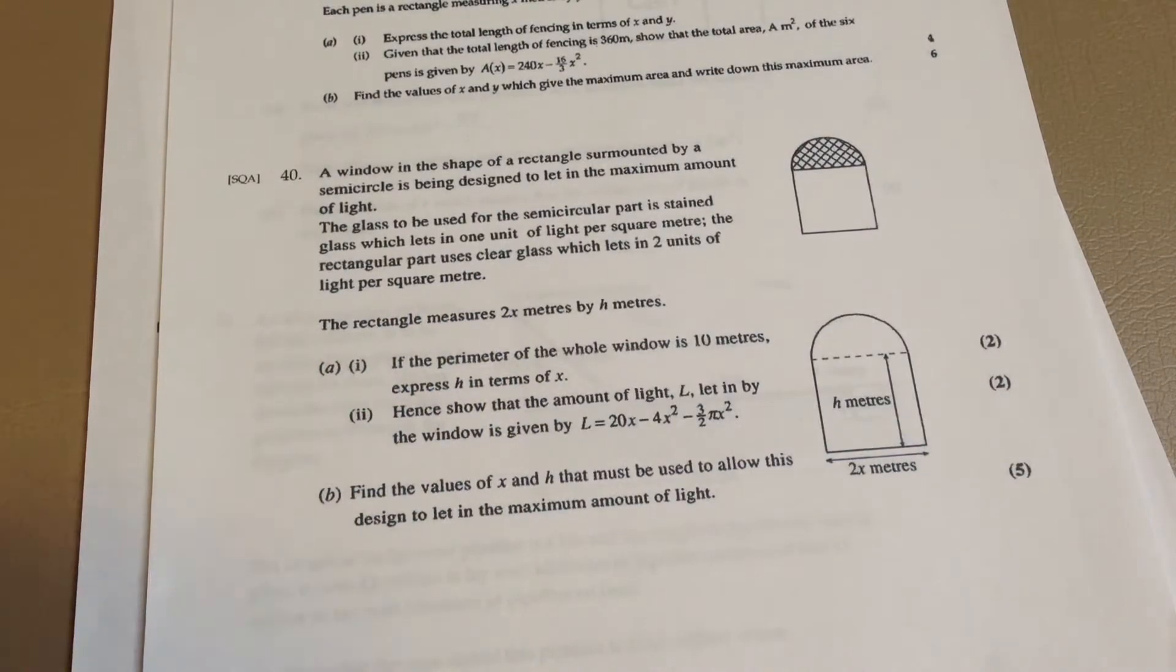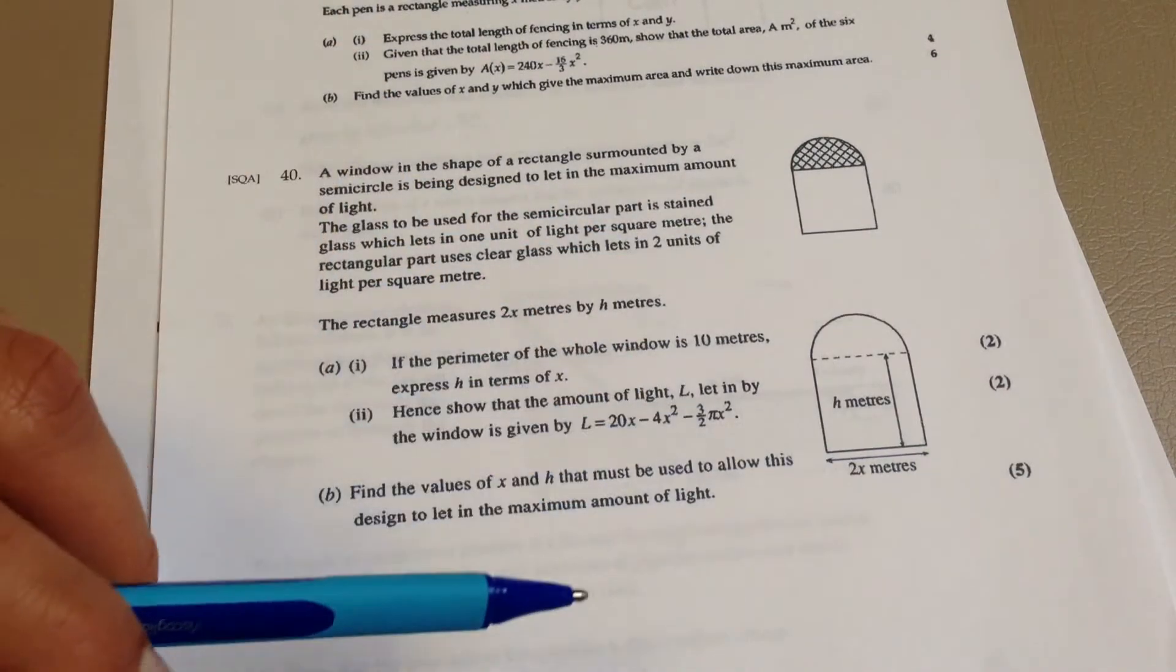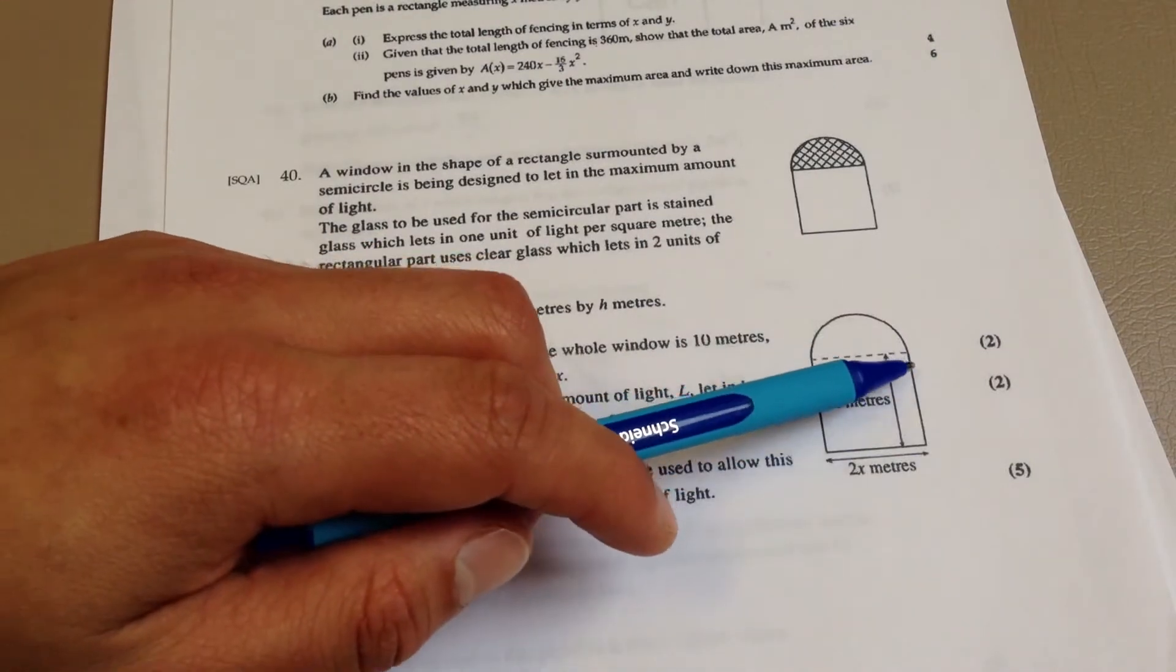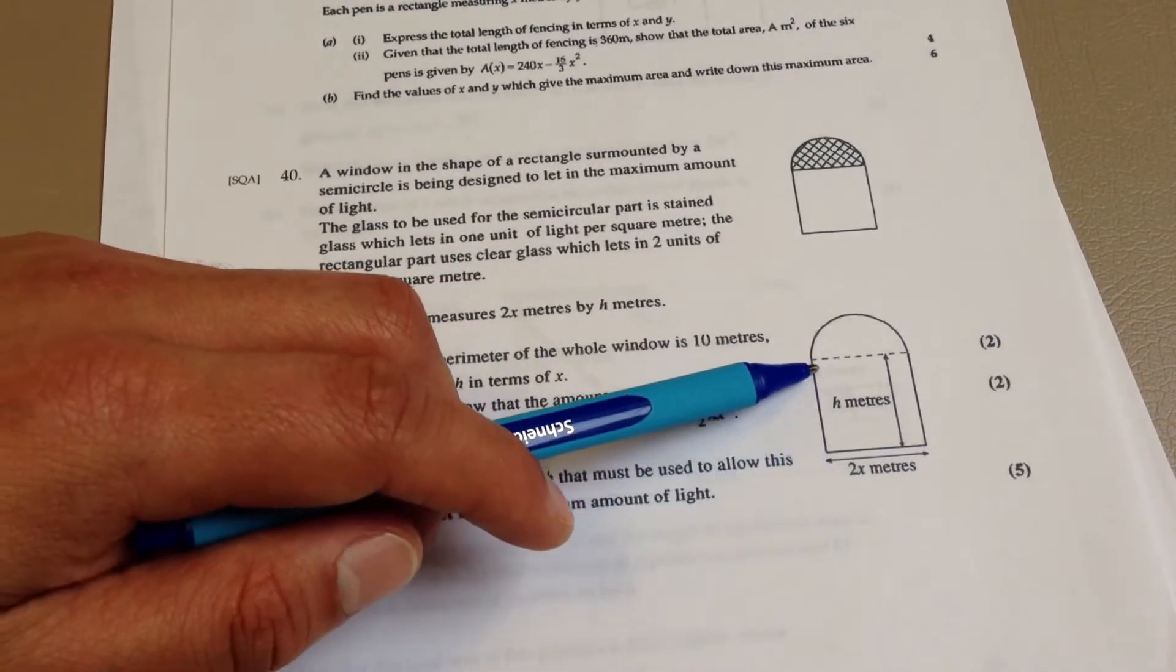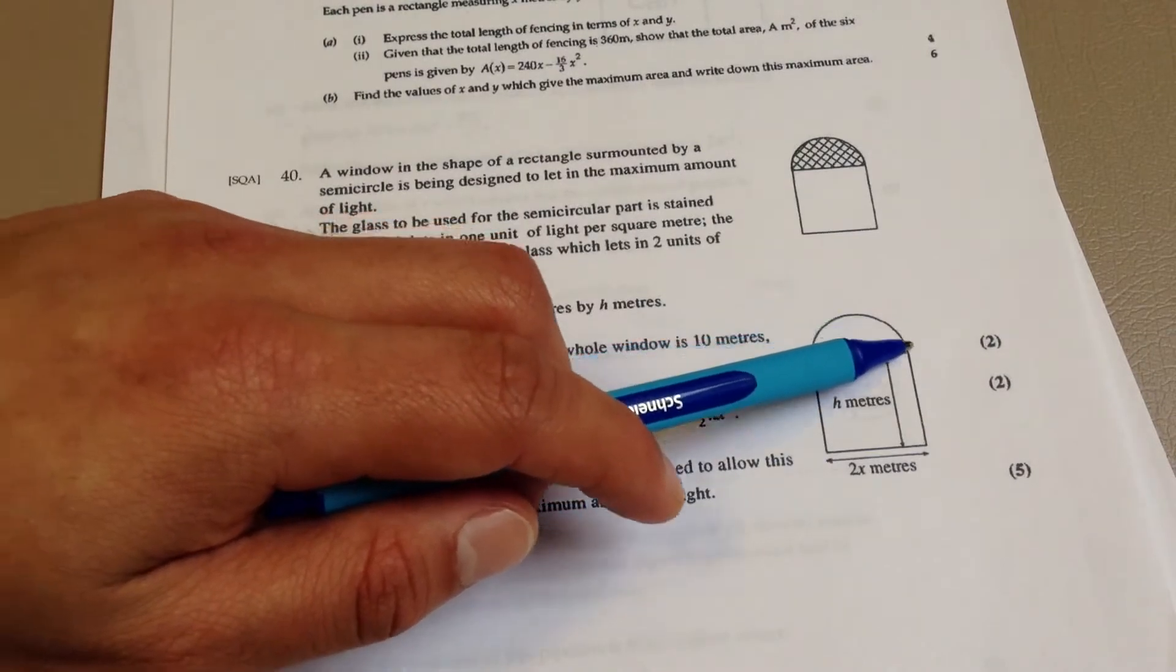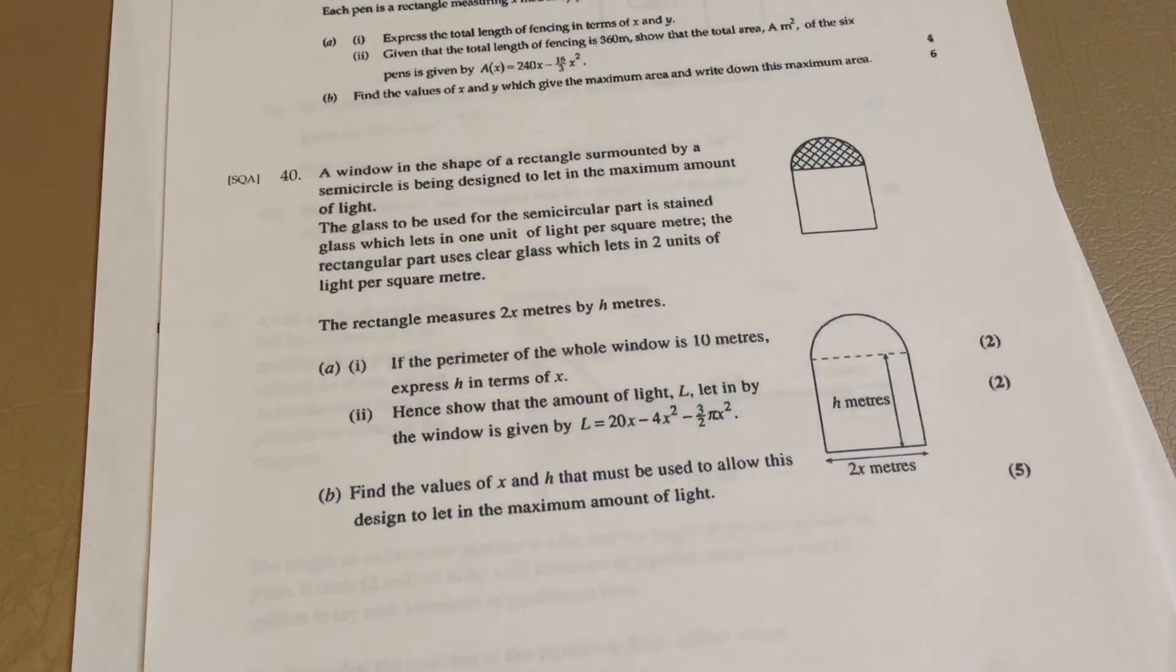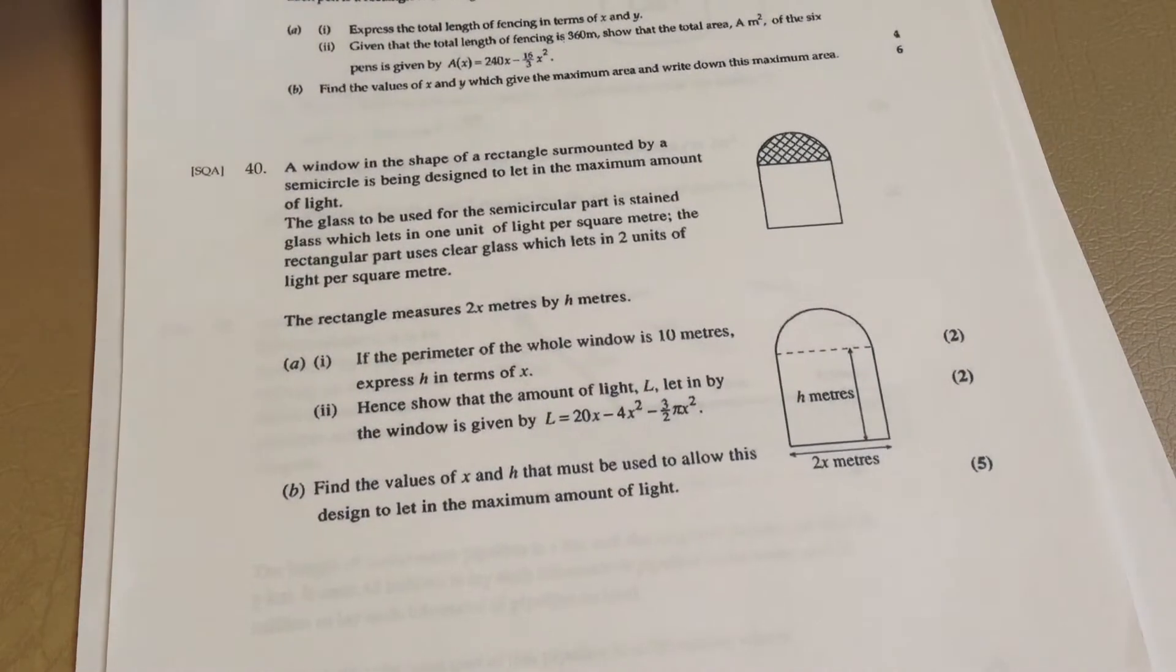What we need to do is find a way to express the perimeter. So the perimeter will effectively be this side, which is h, plus this side, which is 2x, plus this side, which is h, plus the arc of the semi-circle. So let's have a look at that.